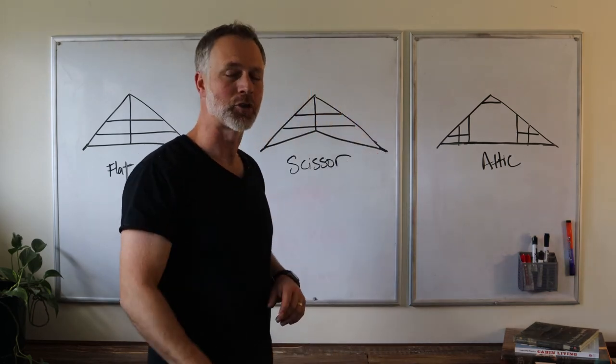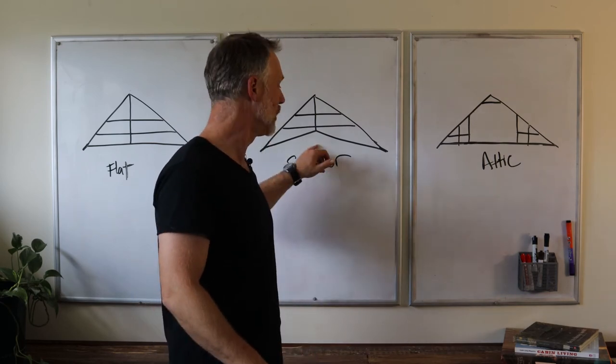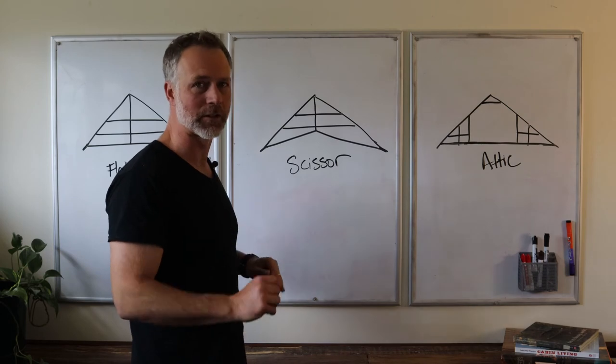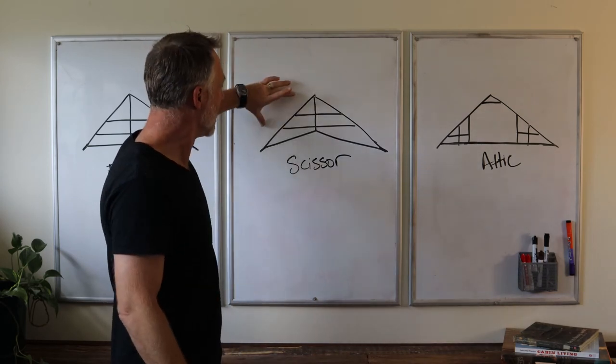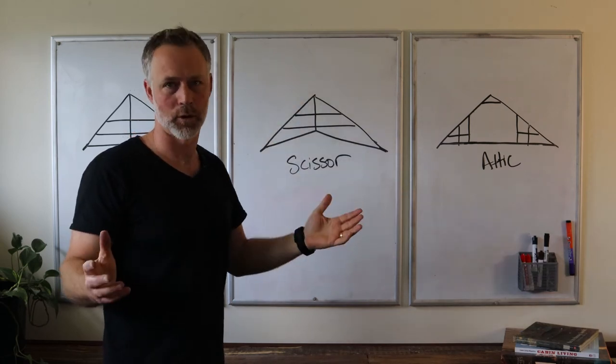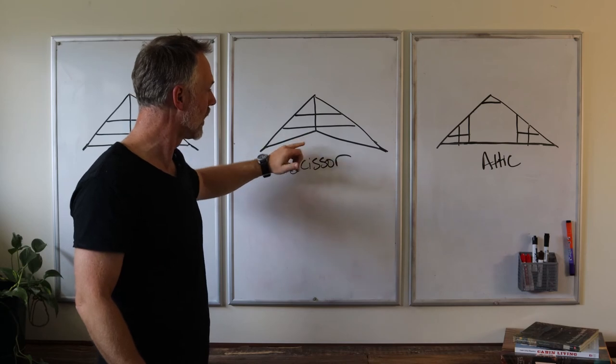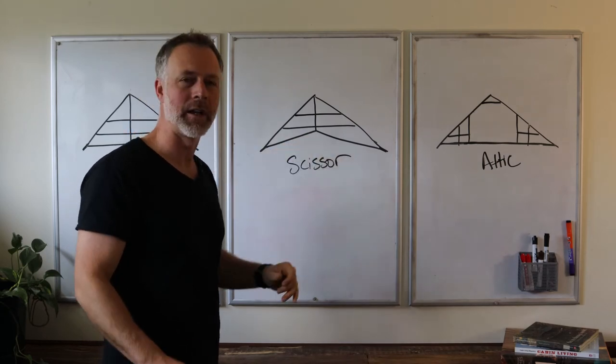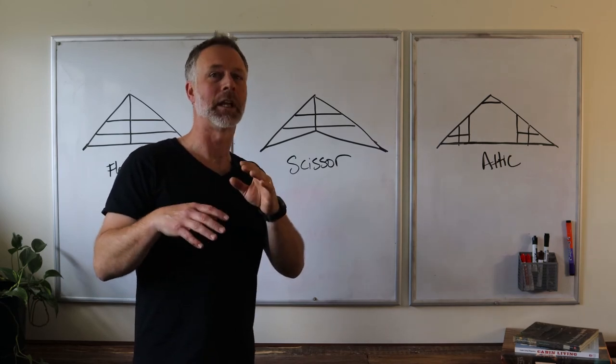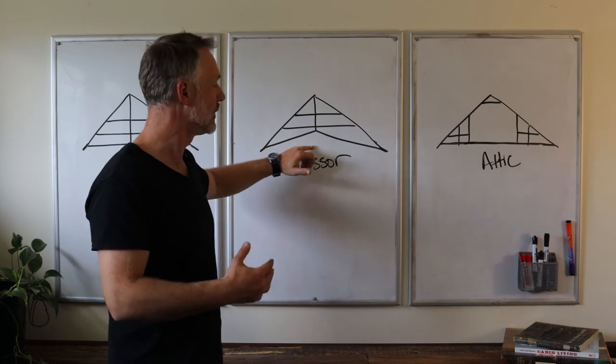If you're trying to gain a little extra head height right down the middle of the building, you can do what's called a scissor truss. The scissor truss would be a little different in the sense that, say this outside pitch is running a 4/12 pitch, the inside of the cord, the ceiling inside your building, will run sometimes maybe a 1.5 pitch, even a 2 pitch. So you're just gaining a few inches as you're going up.